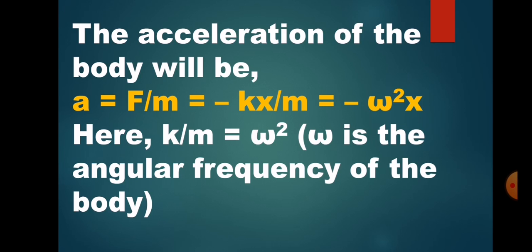We know the formula F equals mass times acceleration, so acceleration equals force divided by mass. Substituting F equals minus kx, we get acceleration a equals minus kx divided by m. Replacing k by m with omega squared, the equation becomes a equals minus omega squared times x, where k divided by m equals omega squared and omega is the angular frequency of the body. Therefore, linear acceleration is directly proportional to the linear displacement.